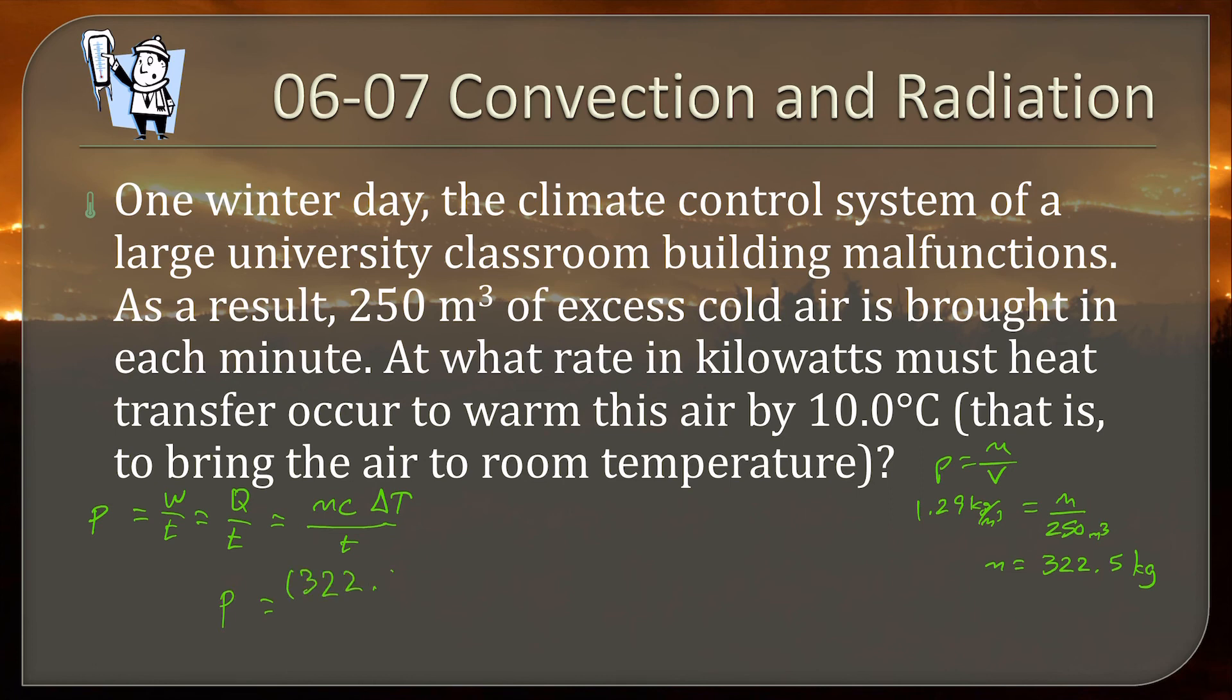So our mass is 322.5 kilograms. C for air is 721 joules per kilogram degrees Celsius. And our change in temperature is 10 degrees Celsius. And the time, each minute, there's our time. It's a minute, 60 seconds. Run that all through your calculator and you get 3.88 times 10 to the 4. And it comes out to be joules per second, which is a watt. If you divide by a thousand to get into kilowatts, you get 38.8 kilowatts to heat the room.